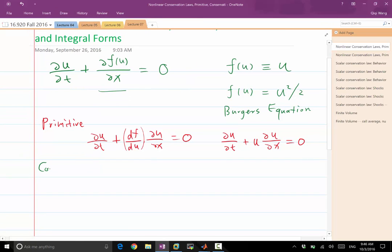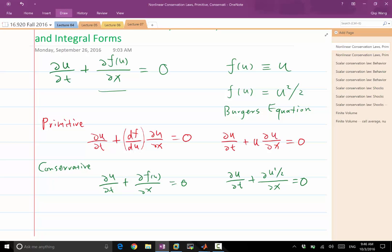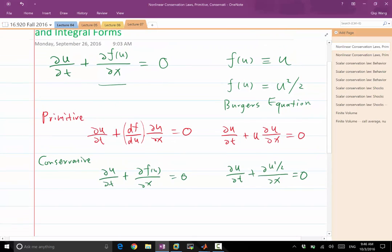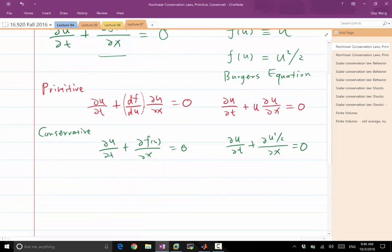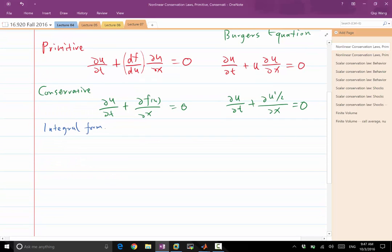So the conservative form is ∂u/∂t + ∂f(u)/∂x = 0. Now, the reason we call it a conservative form is because it is used to derive the integral form, which really tells you why this is called a conservation law equation.